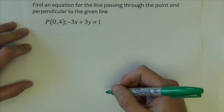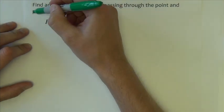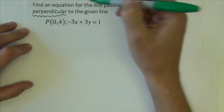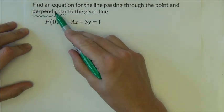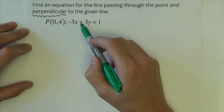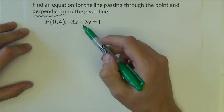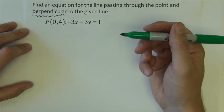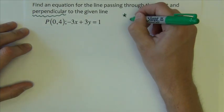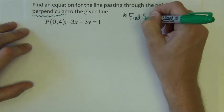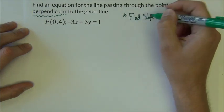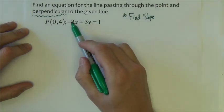This last example is somewhat similar to the previous one, except we are asked to find an equation of a line passing through a point that's perpendicular to this line. If it's perpendicular, that means the slopes will be interpreted a little bit differently. But we still have to start the same way. We have to find the slope. So I'm going to find the slope by solving this for y.